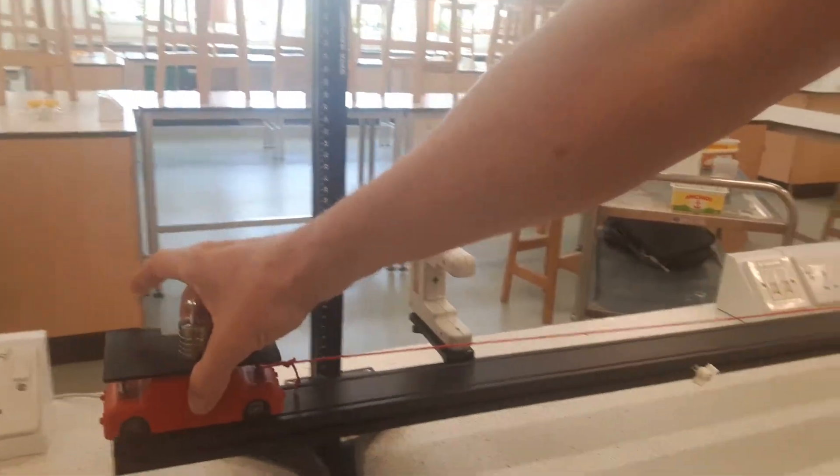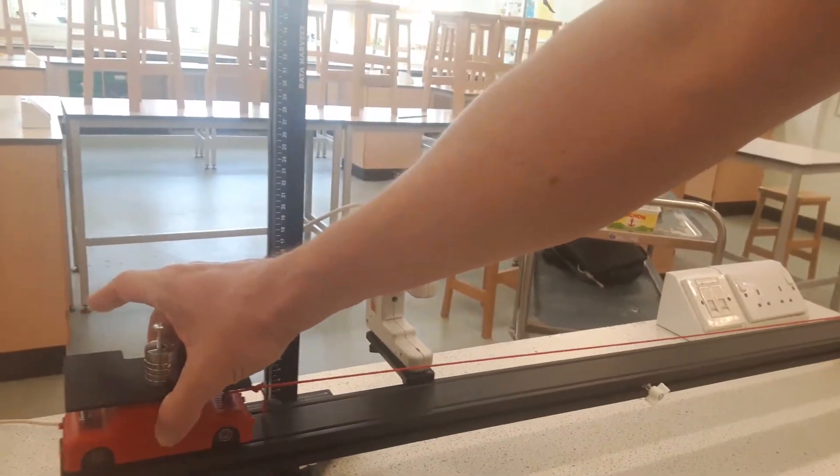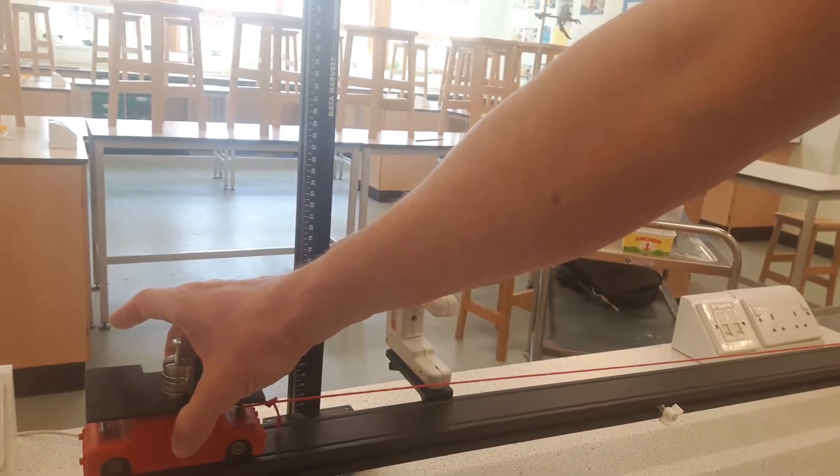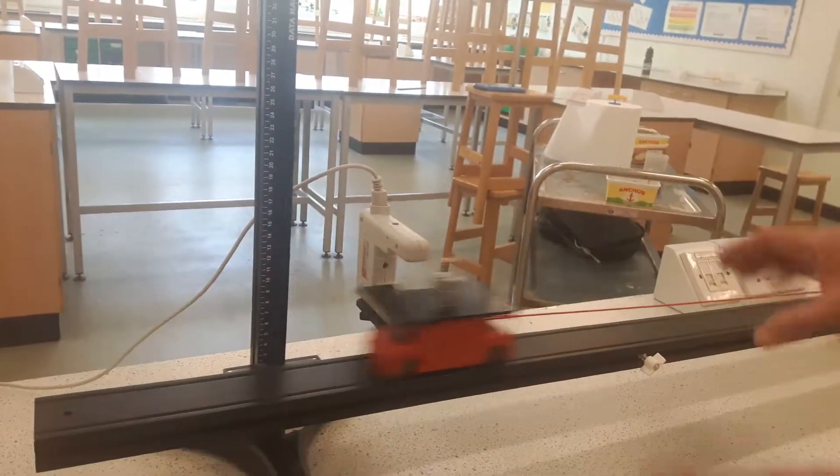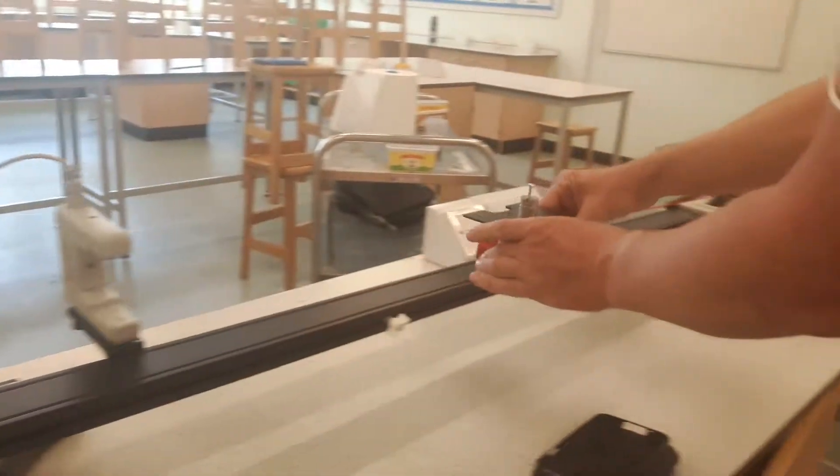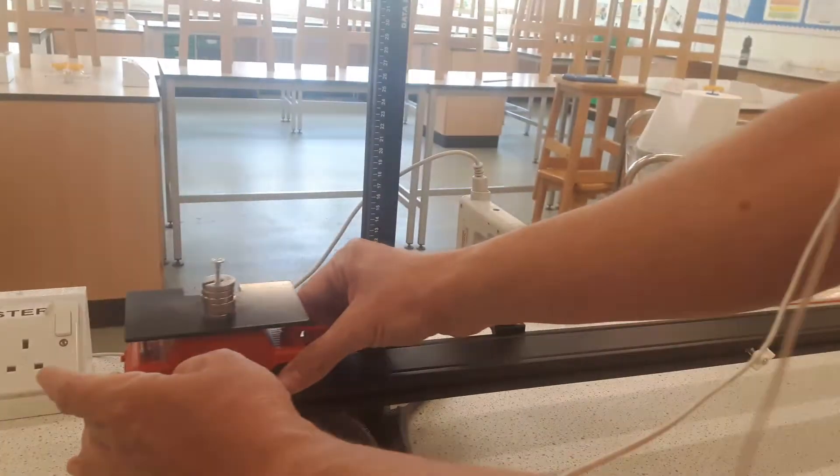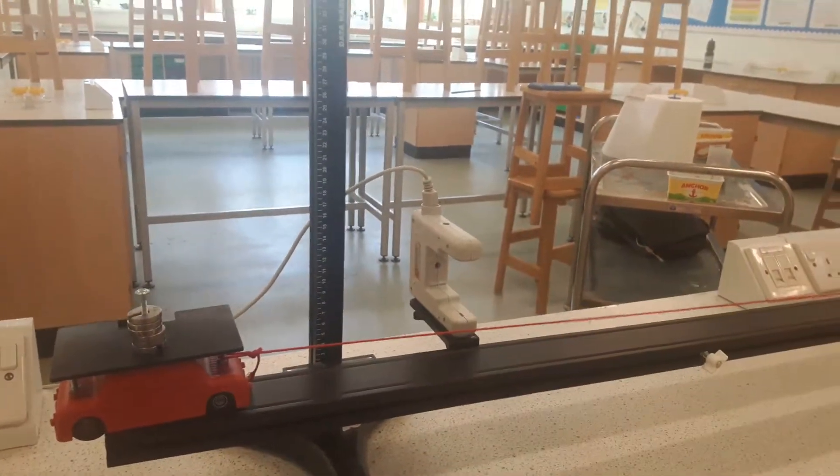Once I've done that, I'm going to repeat the experiment again. Make sure the data logger is ready and allow it to pull through. Bring it back around the light gate. Second result. Third result. And then don't forget to check that your three results are similar.